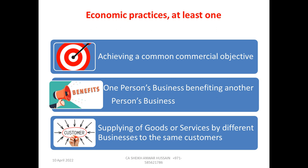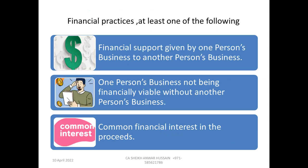For the economic aspect, they have to satisfy any one of three conditions. First, they are achieving a common commercial objective — doing business for a common purpose. Second, one person's business is benefiting another person's business, for example through bulk purchasing, bulk sales, or shared customers. Third, supply of goods or services by different businesses to the same customer — their client is the same but they are rotating sales through different companies. If any one of these conditions is satisfied, the economic condition is met.